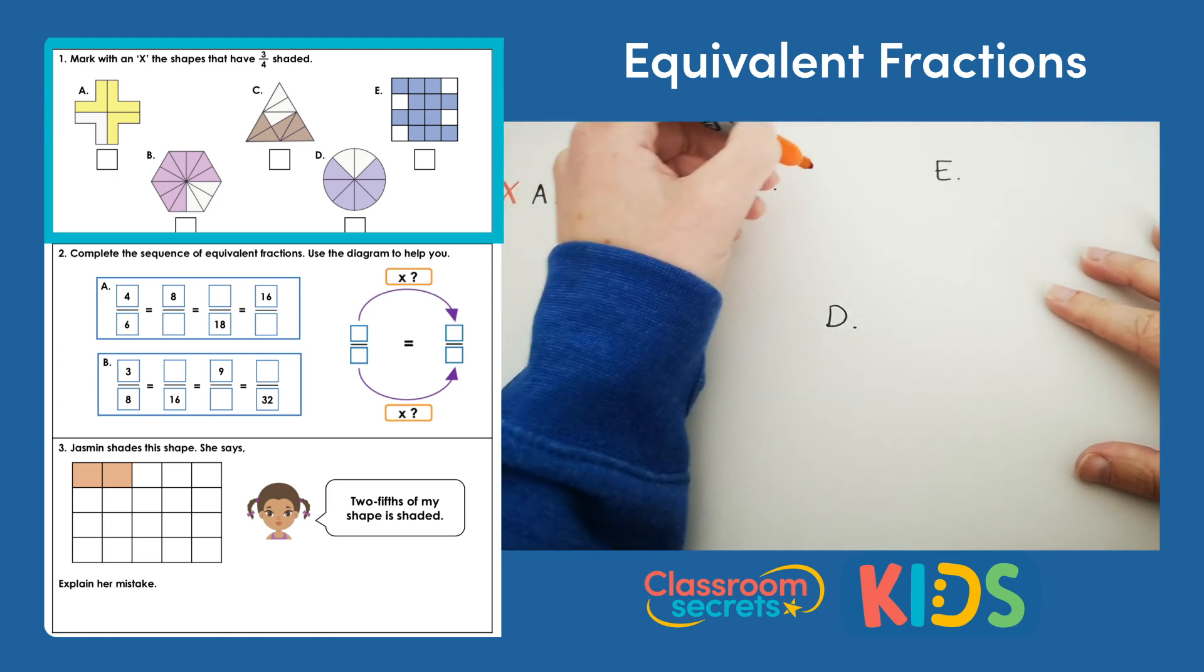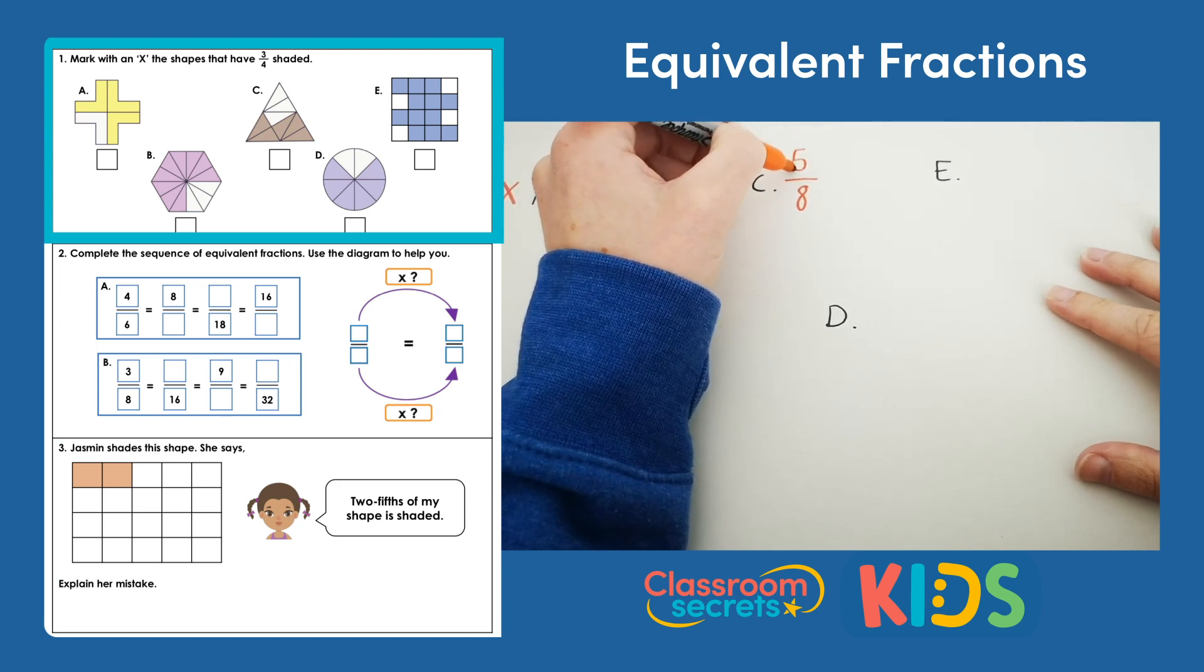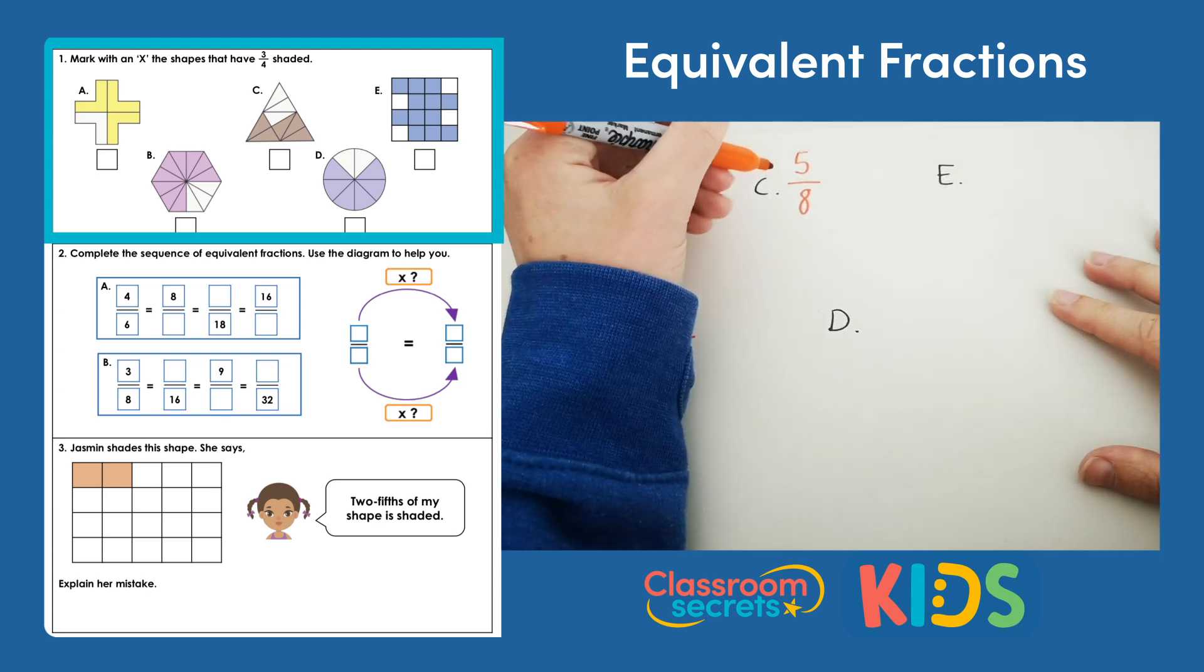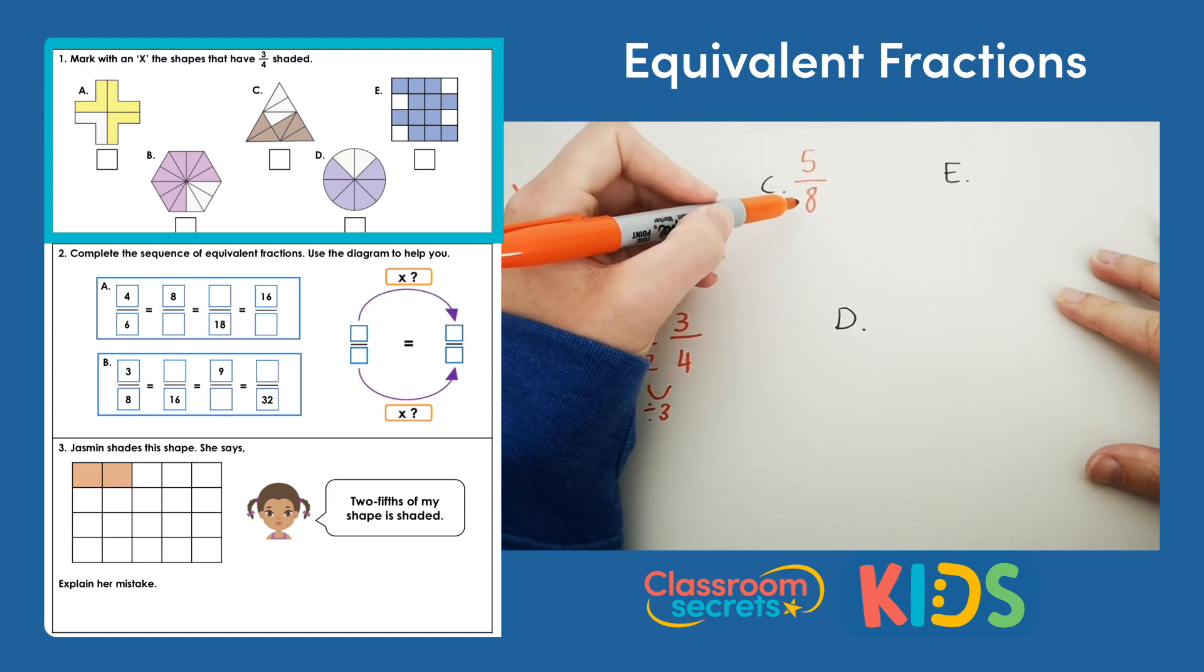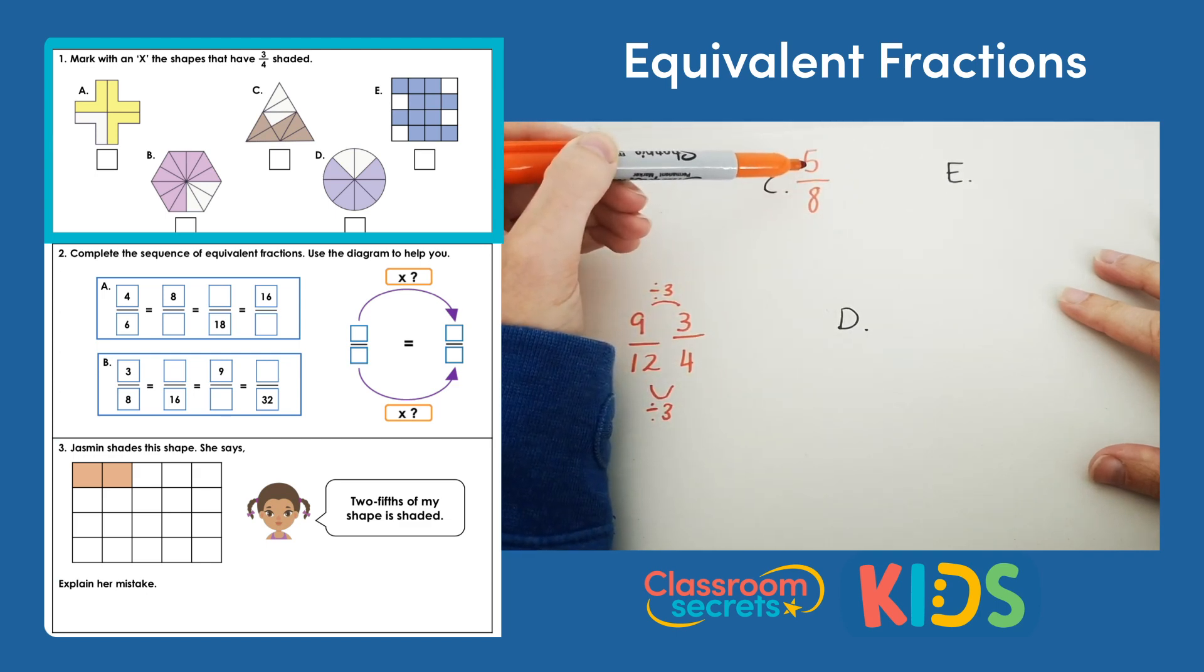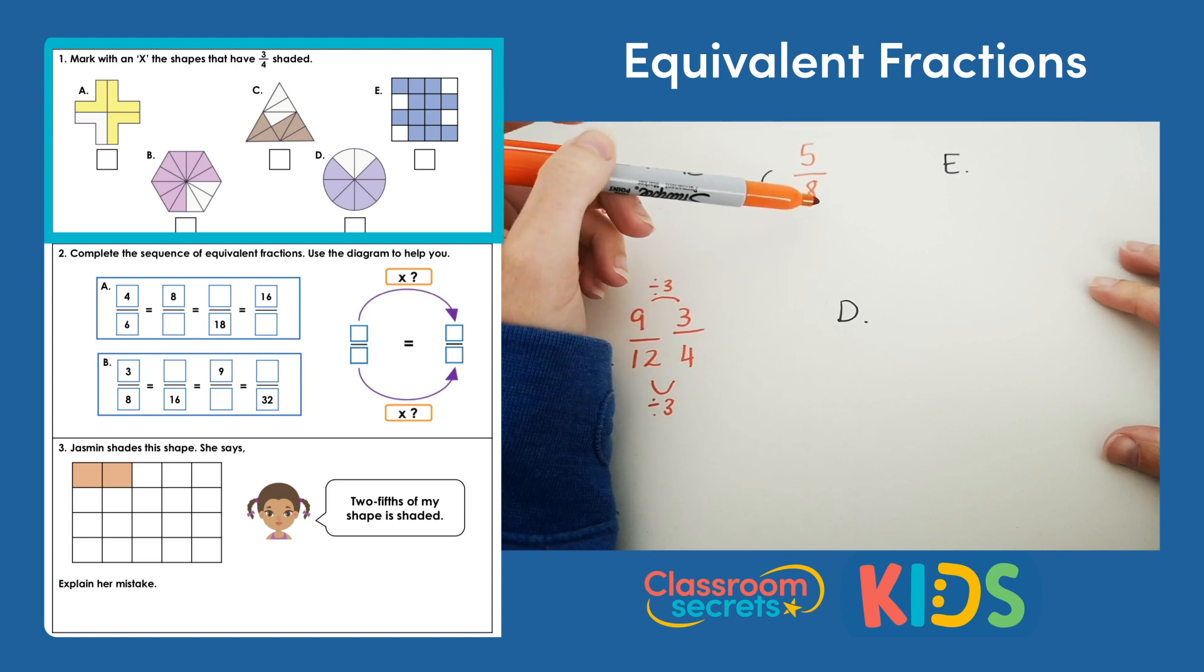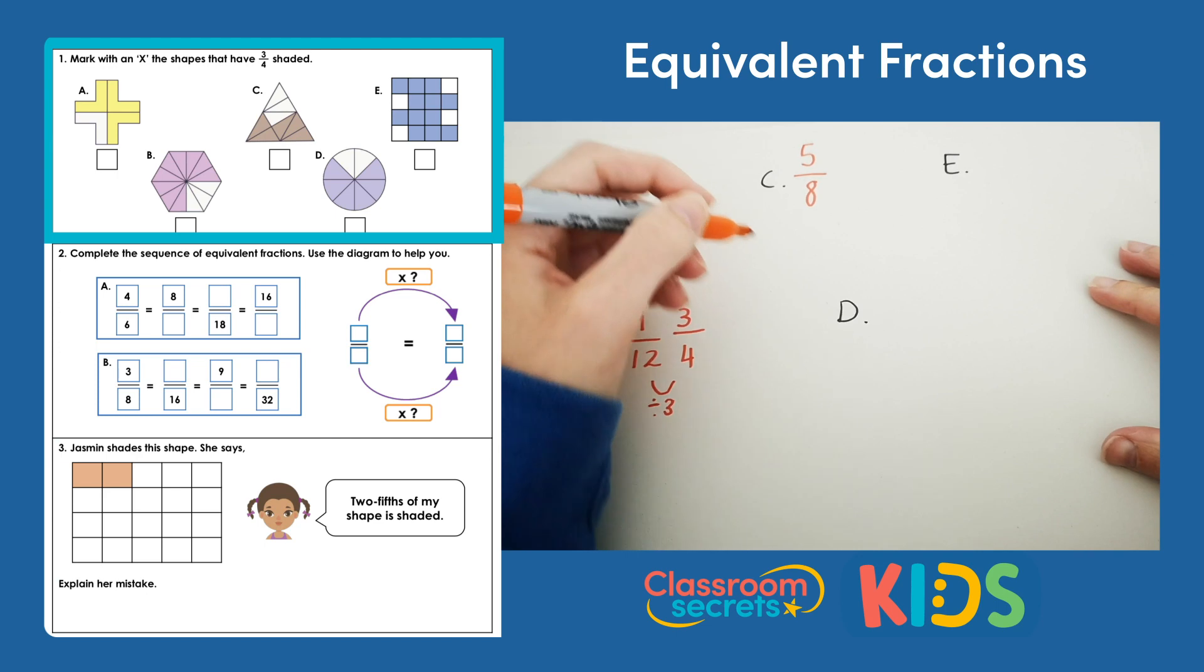Shape C has been split into eight parts and five of those parts have been shaded in brown. So C represents five eighths. There's nothing we can do to make five eighths into three quarters. If I were to divide 8 by 2 I would get 4, which would give us the correct denominator, but then if I were to divide 5 by 2 I would get 2.5, and there's no such fraction as 2.5 quarters. That's not real. So five eighths is as it is and we don't put a cross in the box.